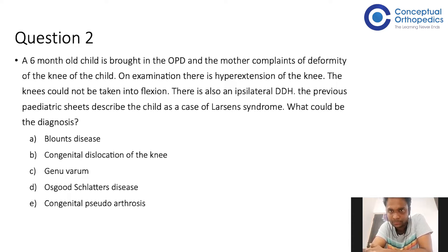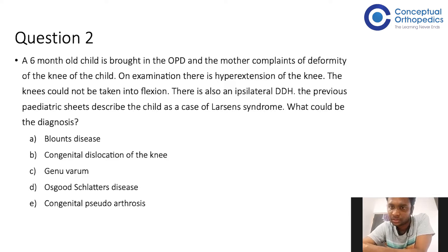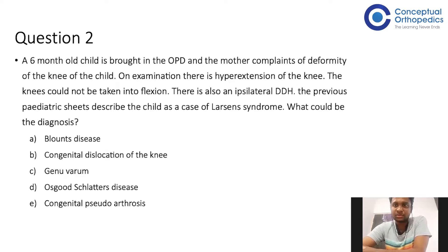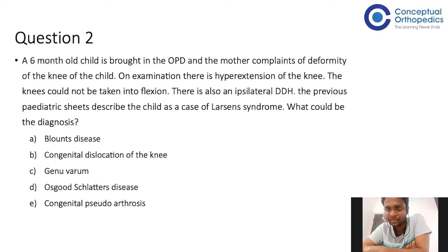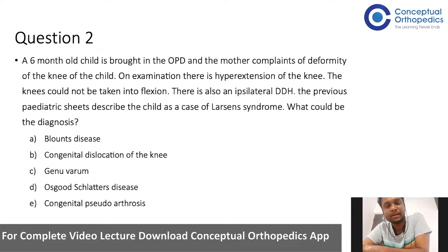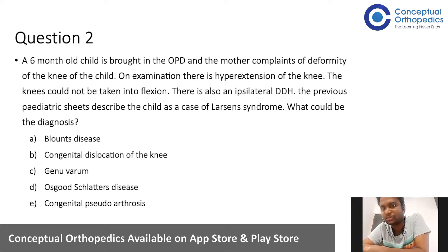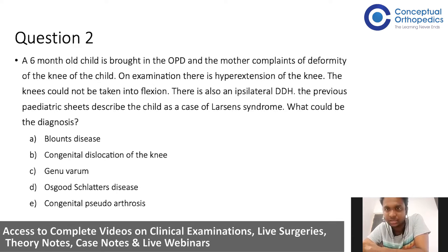The options are: hyperextension of the knee — Blount's disease, congenital dislocation of the knee, genu varum, Osgood-Schlatter's disease, and congenital pseudoarthrosis. The child is six months old with ipsilateral DDH and a history of Larsen syndrome. It is not Blount's disease, not genu varum, not Osgood-Schlatter's disease. The answer is congenital dislocation of the knee.